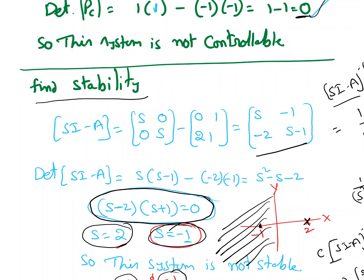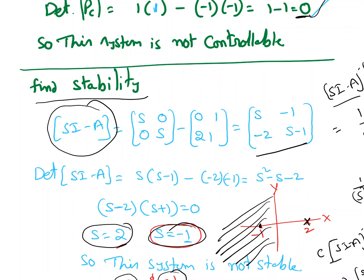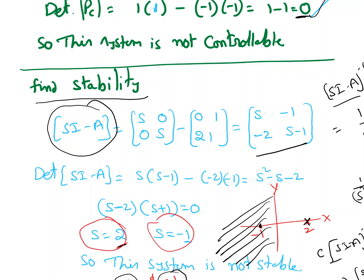To find stability, we need to compute sI minus A. I found sI minus A equal to [s, -1; -2, s-1], and I found the determinant of sI minus A. Setting it equal to 0 gives us the characteristic polynomial equation. I found s equal to 2 and s equal to minus 1. One pole is at 2, another pole is at minus 1. Since we have a pole on the right-hand side of the y-axis, the system is not stable.